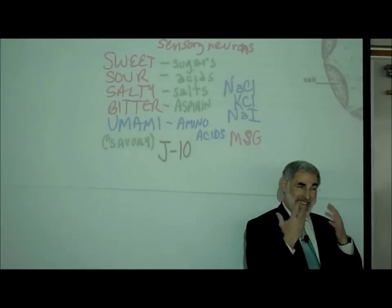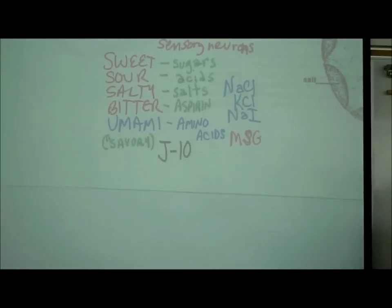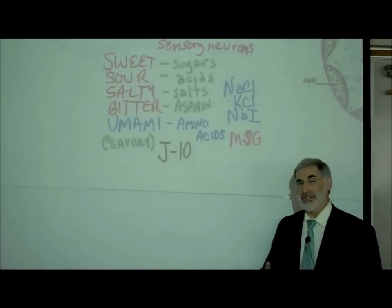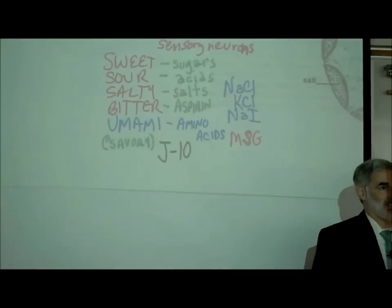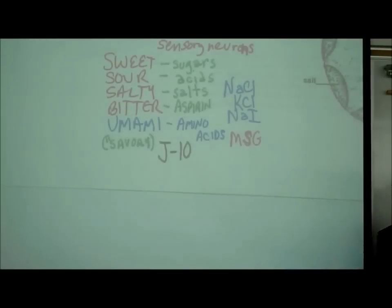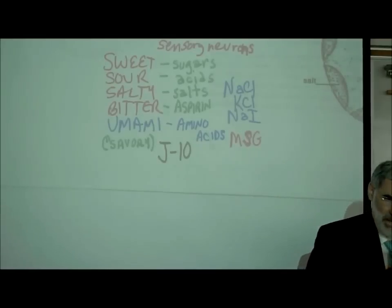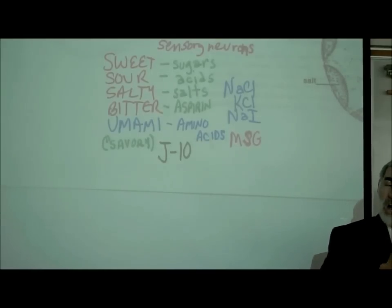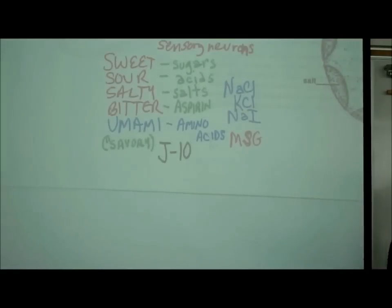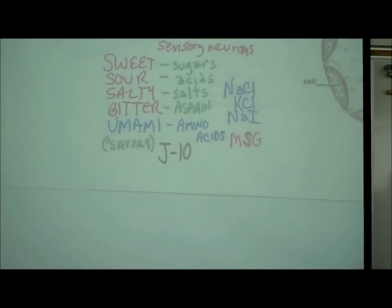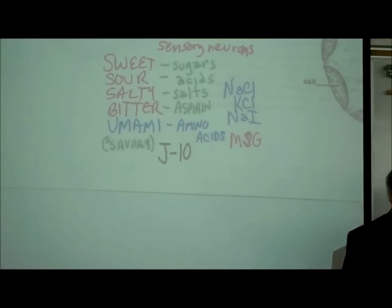What these taste buds or chemoreceptors are really informing us about is whether there are sugars, amino acids, salts, or acids in our food. As for bitter — anything that tastes bitter might be toxic or poisonous, so you're probably going to spit it out. It's really to inform us about what's in our food.